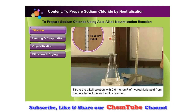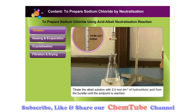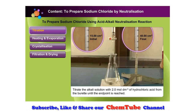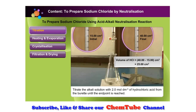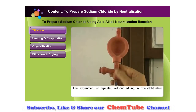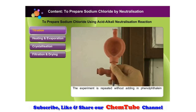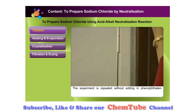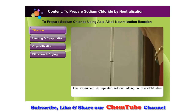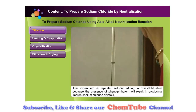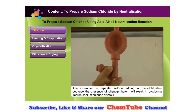Can you predict the amount of hydrochloric acid needed to neutralize 25 cubic centimetres of the sodium hydroxide solution? The amount needed is 25 cubic centimetres. The experiment is then repeated without adding phenolphthalein, because the presence of phenolphthalein would result in producing impure sodium chloride crystals.